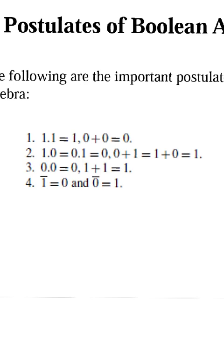Second postulate: 1 into 0 is equal to 0. 0 into 1 is equal to 0. Same way, 0 plus 1 is equal to 1, and 1 plus 0 is also equal to 1. Also, 0 into 0 is equal to 0, and 1 plus 1 is equal to 1. 1 bar is equal to 0, and 0 bar is equal to 1.